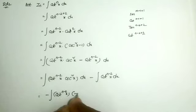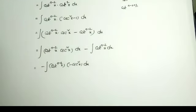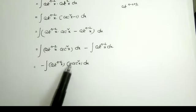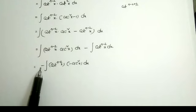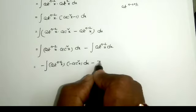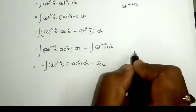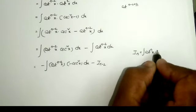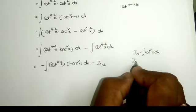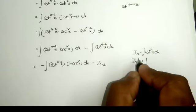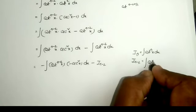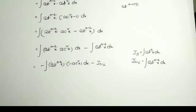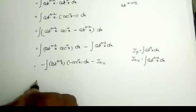This equals minus the integral of cot^(n-2) x times minus cosec² x. Applying the minus outside the integration — minus of minus gives plus. And this second integral is just I_(n-2). Already at the start we defined I_n as the integral of cot^n x dx, so replacing n by n-2 gives I_(n-2) equals the integral of cot^(n-2) x dx.